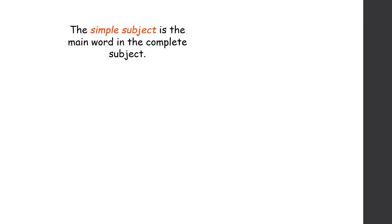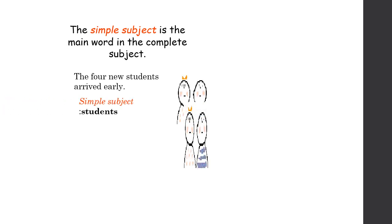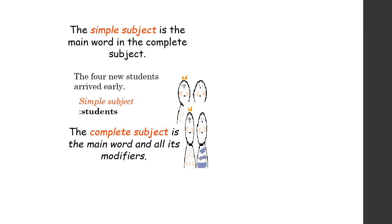A subject can be simple or it can consist of many words. A simple subject is the main word in the complete subject. For example, 'the four new students arrived early' — the complete subject is 'the four new students,' whereas the simple subject is 'students.' The words 'the four new' are giving additional information about the simple subject. The complete subject is the main word with all its modifiers, like articles, possessives, demonstratives, or other pronouns.